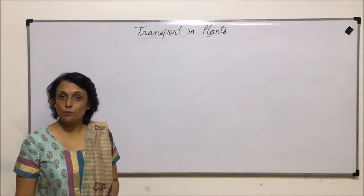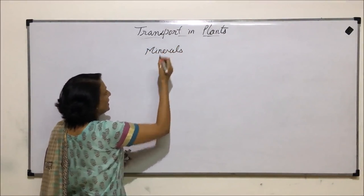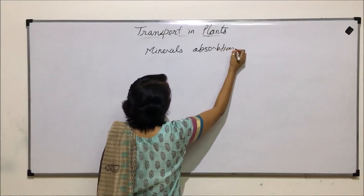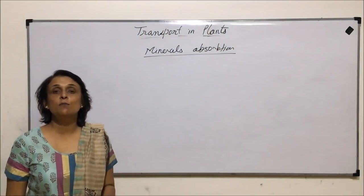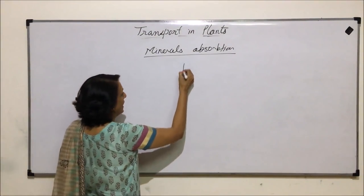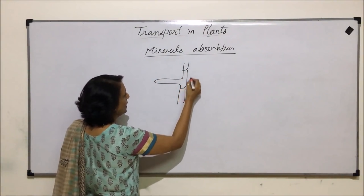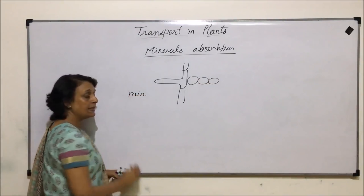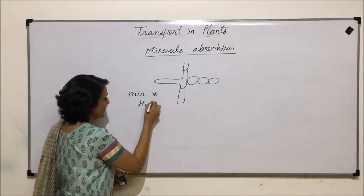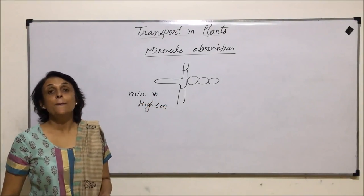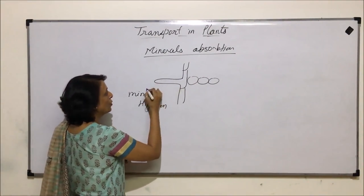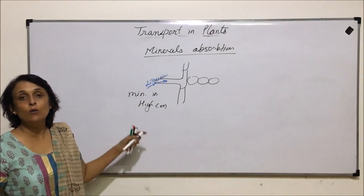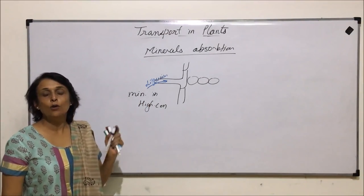Now let us talk about mineral absorption by plants. Minerals are first absorbed and then transported. There are two ways in which these minerals get absorbed — either actively or passively — through the same root hair through which water also gets absorbed. If the mineral in the soil is in high concentration, the movement is going to be passive — from higher concentration to lower concentration — by the process of diffusion, without expenditure of energy.